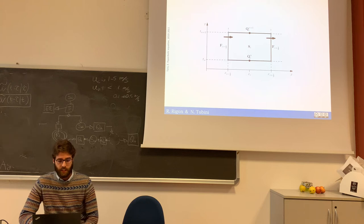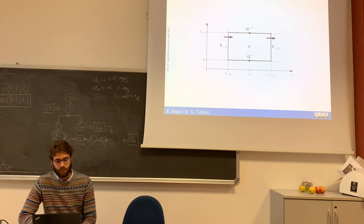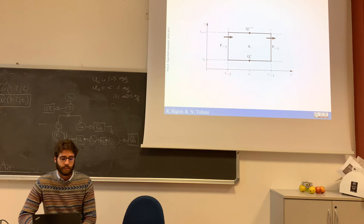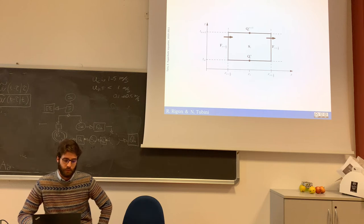Q represents, in our case, the water content. The water content in cell i at time level n is updated to the water content in cell i at time level n+1 according to the fluxes at the borders of the control volume, and eventually a source term, which for this equation can be evapotranspiration.